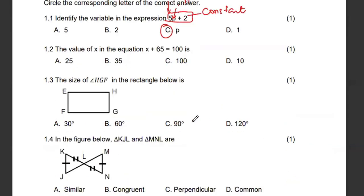Then 1.2, the value of x in the equation. We need to solve this equation. Let's move the 65 to that side. Since we are adding, when the 65 crosses the equal sign, we shall be subtracting. So it's going to be x equals 100 minus 65 and this gives us 35, which is option B.